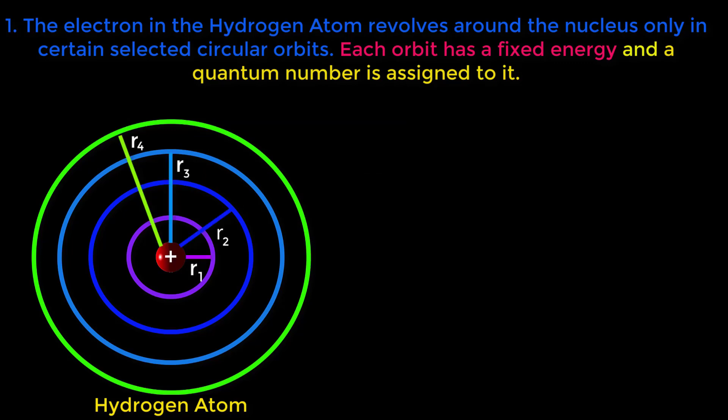Distance of each orbit from nucleus, that is radius of orbit, is also fixed. The radius of first orbit r₁ equals 0.529 angstrom. The radius of second orbit r₂ equals 2.11 angstrom. The radius of third orbit r₃ equals 4.75 angstrom.